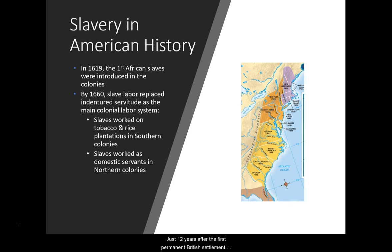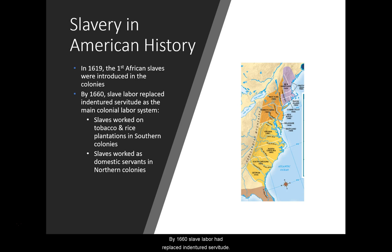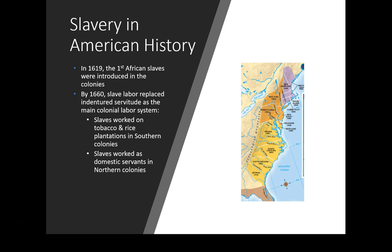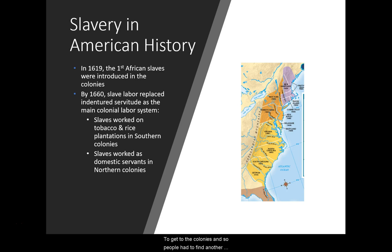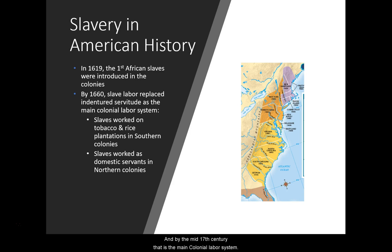Just 12 years after the first permanent British settlement at Jamestown, in 1619, the first African slaves were introduced to the British colonies. By 1660, slave labor had replaced indentured servitude. Indentured servitude is where another person pays your passage to the colonies in exchange for a promise that you will work for them for seven years, at the end of which you're freed.